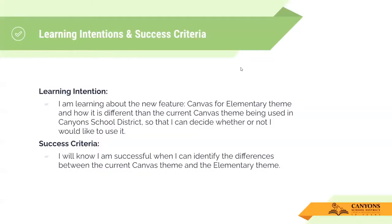I wanted to start with our learning intentions and success criteria for this training. Today you're learning about this new feature — it's the Canvas for Elementary theme. This is different than what was released last year or the year before, where you could go into your Canvas course and just enable a certain font. This is different than that. Today you're learning about this new theme and how it's different than the current Canvas theme we're used to using in Canyon School District, and then you'll have the option to decide whether or not you want to use it.